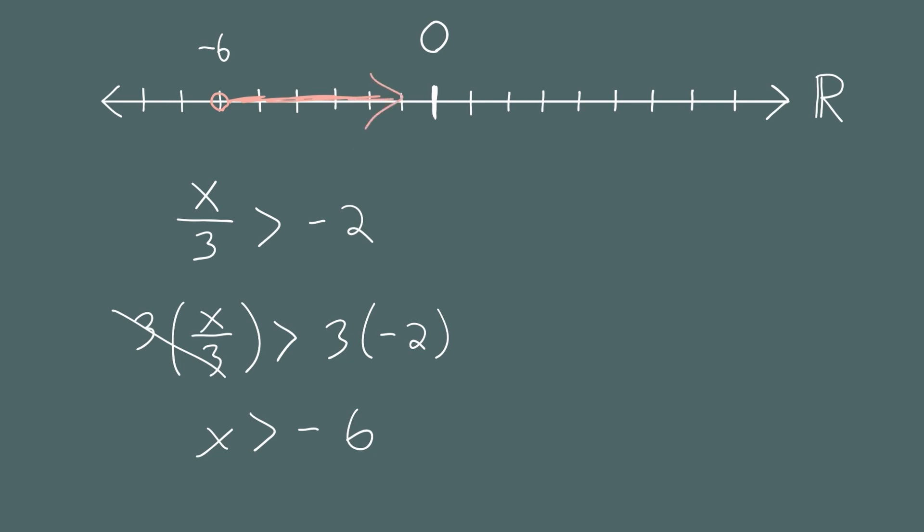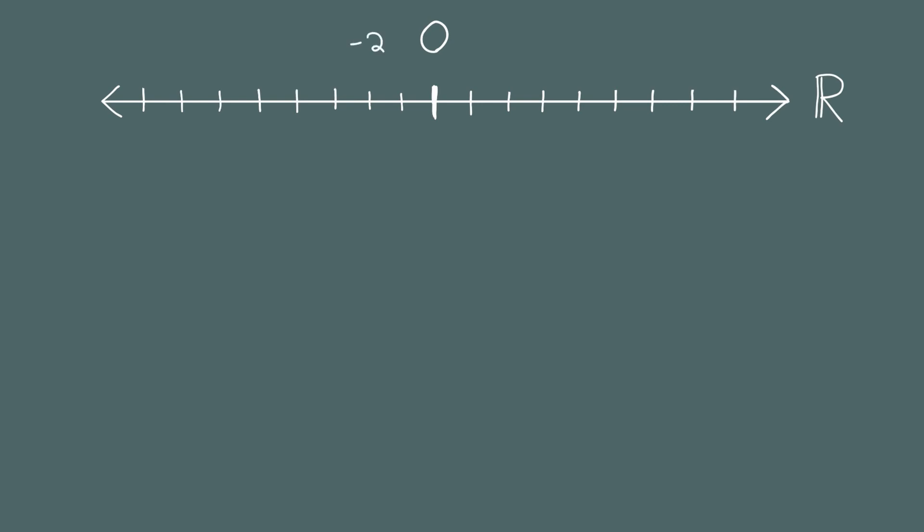So far we've solved inequalities involving addition, subtraction, multiplication, and division. But there is one thing to be aware of when multiplying or dividing by a negative number — this is where inequalities differ from equations. To introduce this, let's return to the real number line. Label negative 2 and negative 5. We know negative 5 is less than negative 2 because it lies to the left.